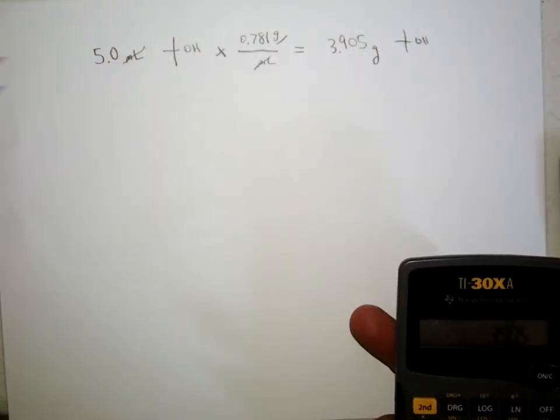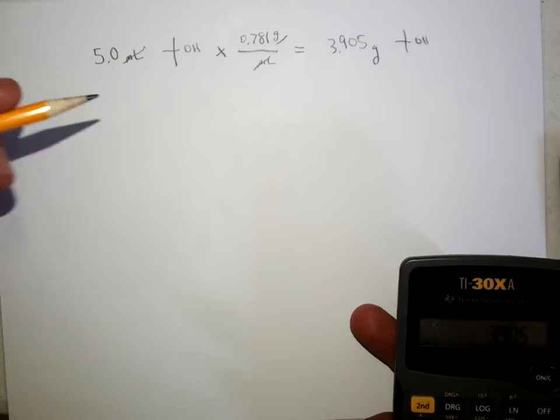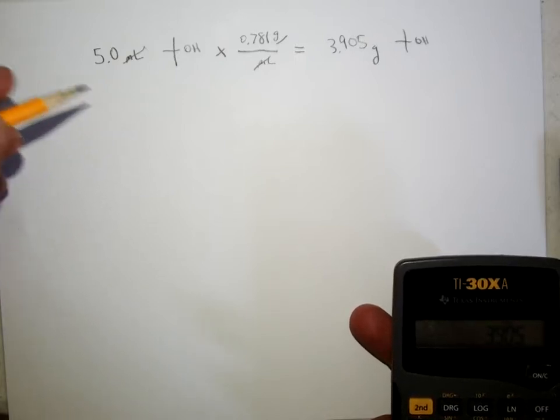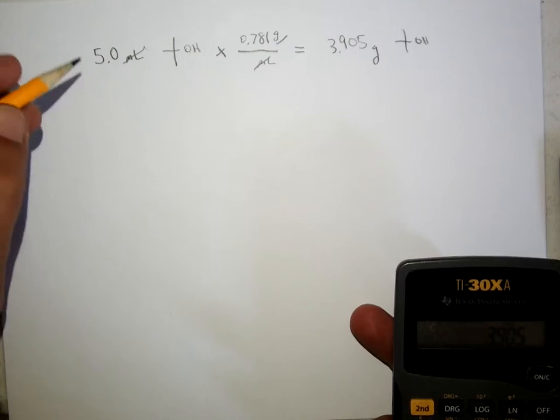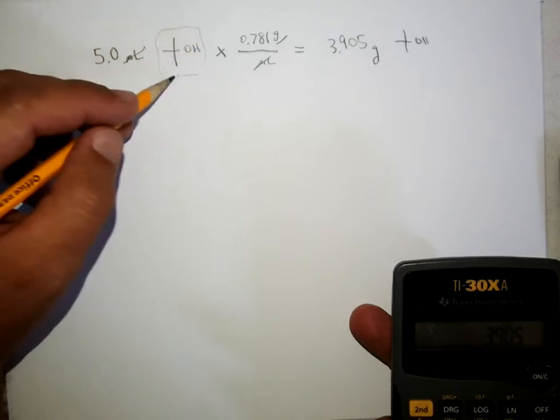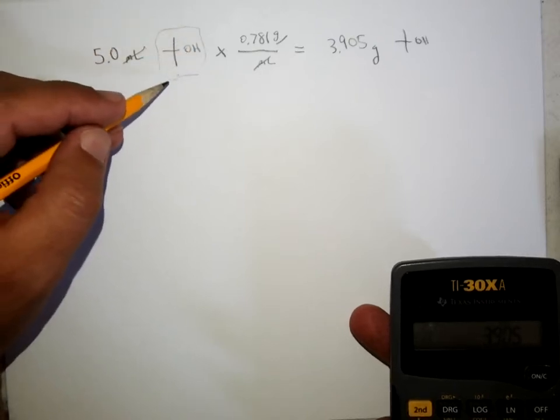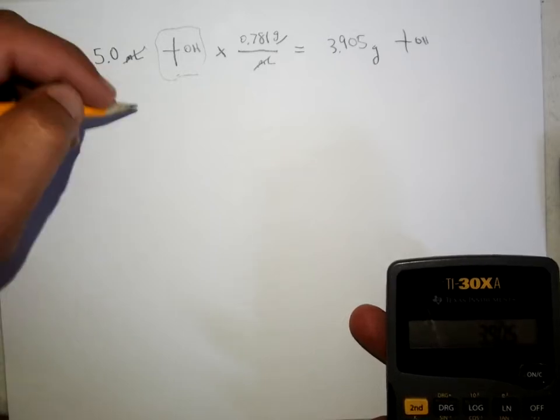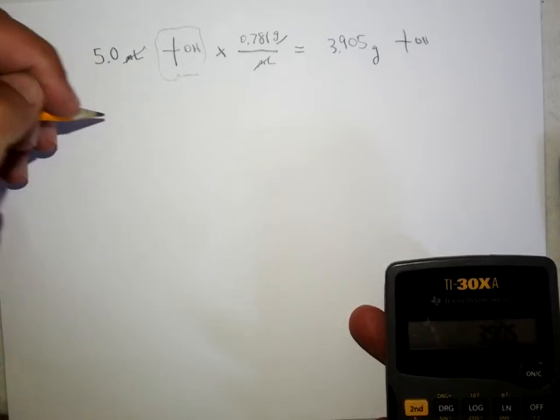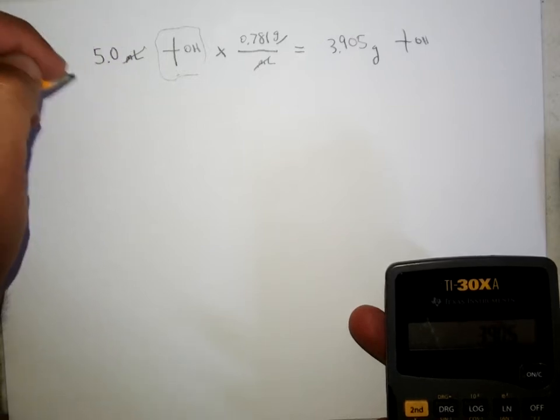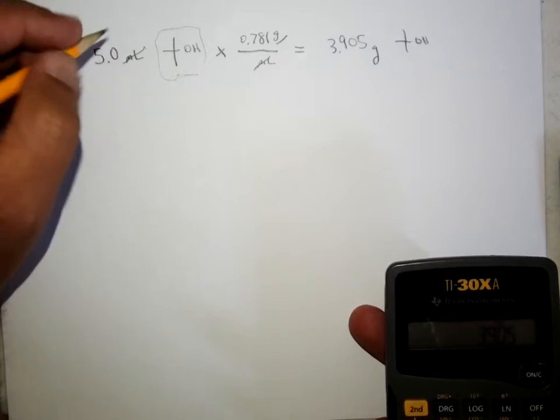And then normally you would need to find the limiting reagent and do some stoichiometric calculations to do that. But in this case, this is the expensive reagent, the tert-butanol. The hydrochloric acid we put in an excess, so we don't have to worry about what the limiting reagent is. It's pretty much told to us that it's the t-butanol. So we're not going to worry about how much hydrochloric acid is in there.